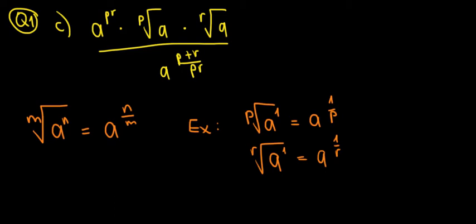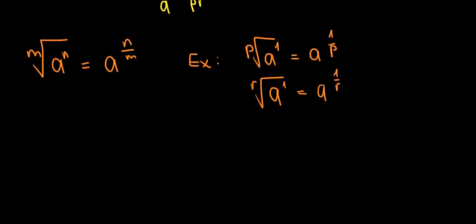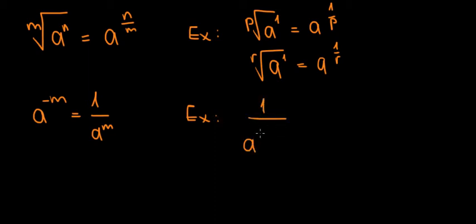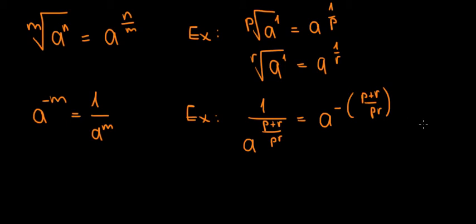We also have a division: we divide by a to the power p plus r over pr. The relevant formula is: a to the power negative m equals 1 over a to the power m. So dividing by a to the power p plus r over pr is the same as multiplying by a to the negative p plus r over pr.